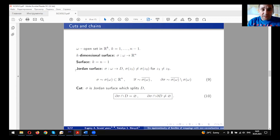We say only surface if K equals to n minus 1. A surface is called Jordan if it takes different values for different arguments. A cut is a Jordan surface which splits domain D. This means relation (10).